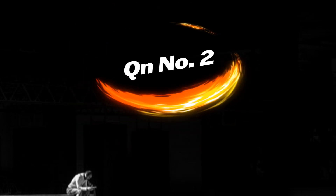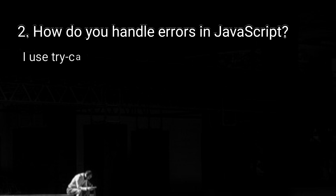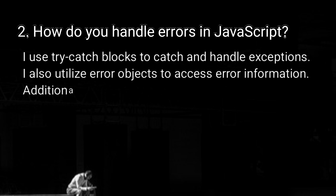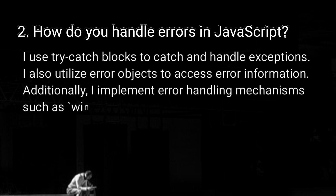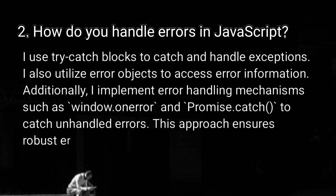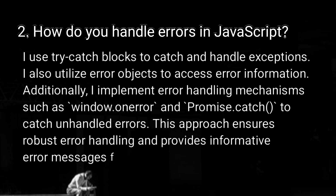The second question: how do you handle errors in JavaScript? I use try-catch blocks to catch and handle exceptions. I also utilize error objects to access error information. Additionally, I implement error handling mechanisms such as window.onerror and promise.catch to catch unhandled errors. This approach ensures robust error handling and provides informative error messages for debugging.